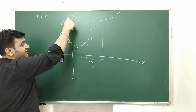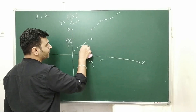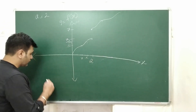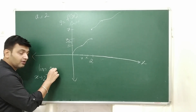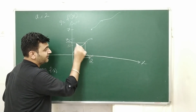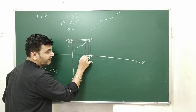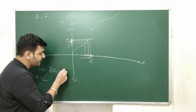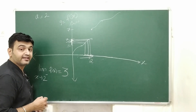Suppose the graph of the function looks something like this, and let's try to find the limit as X approaches 2. For the left hand limit, X approaching 2 minus means X is on the left side of 2. As you can see from the graph, as you go closer and closer to 2 from the left hand side, the images are approaching towards 3. Therefore the left hand limit for this function is 3 — it exists and equals 3.